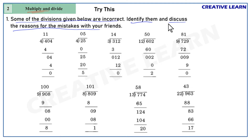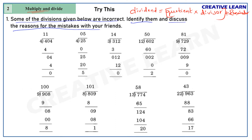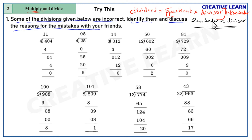Before going to do that, just recall the conditions of division. First rule: Dividend = Quotient × Divisor + Remainder. Second rule: Remainder should always be less than the Divisor. These are the two rules we will use.